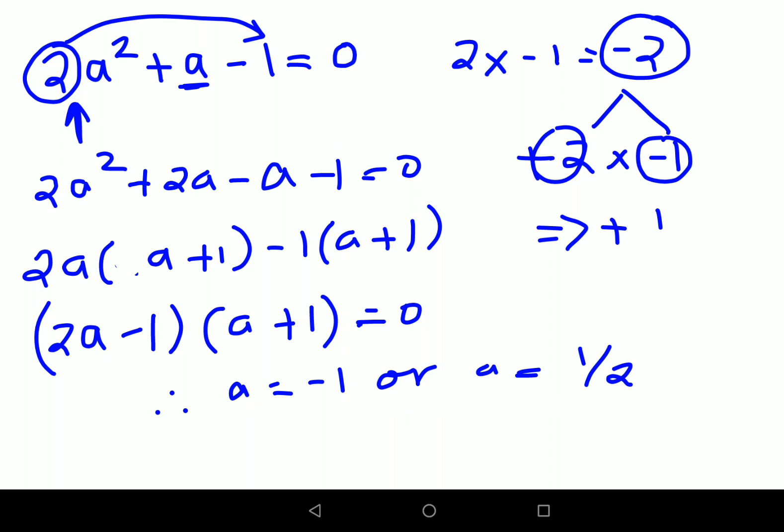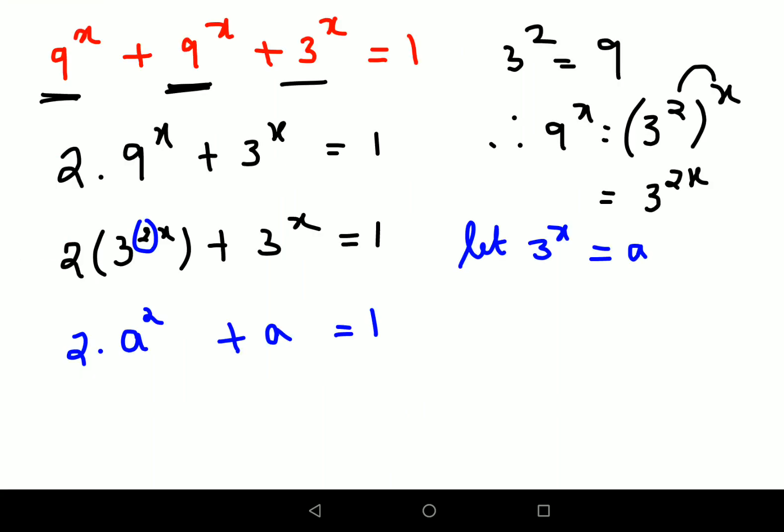Now please understand, I can't have a equals to minus 1 as my answer. Why? Because if you remember, 3 raised to x was taken as a. So if I do 3 raised to x equals to minus 1, using the law of logarithms, this doesn't work. Log of a negative number we can't find. So this is absolutely gone.